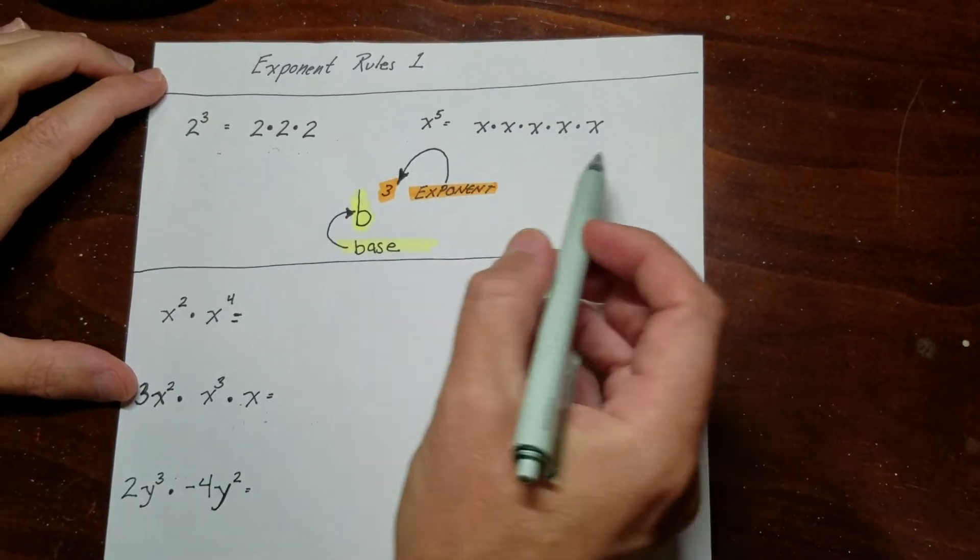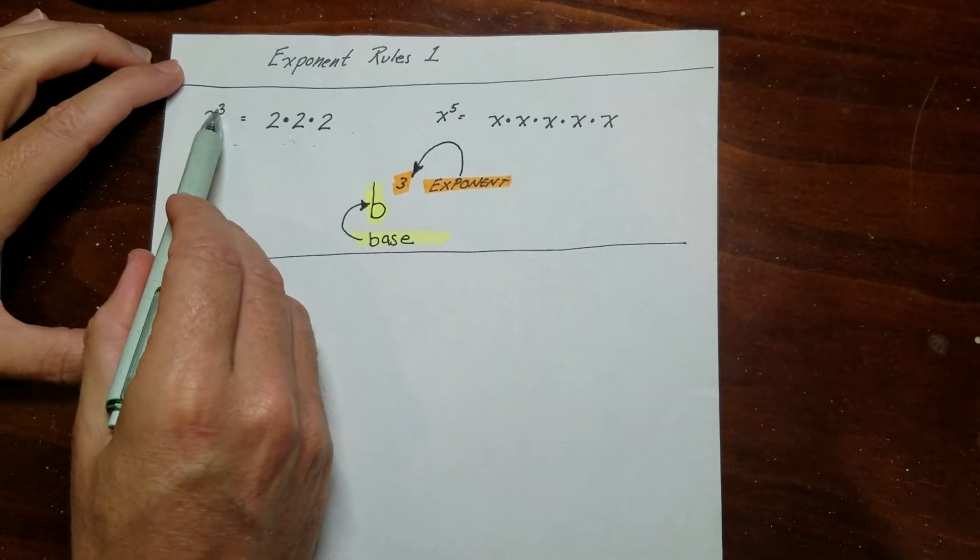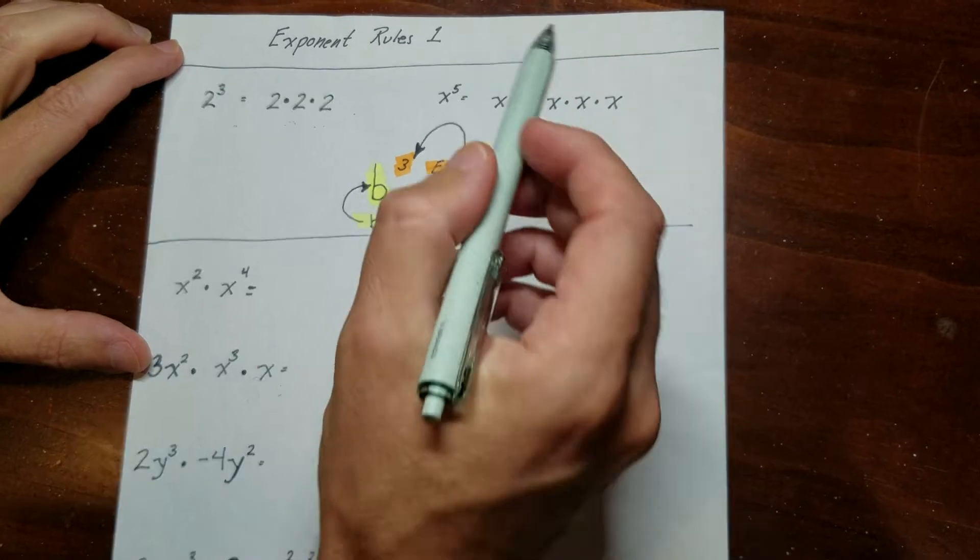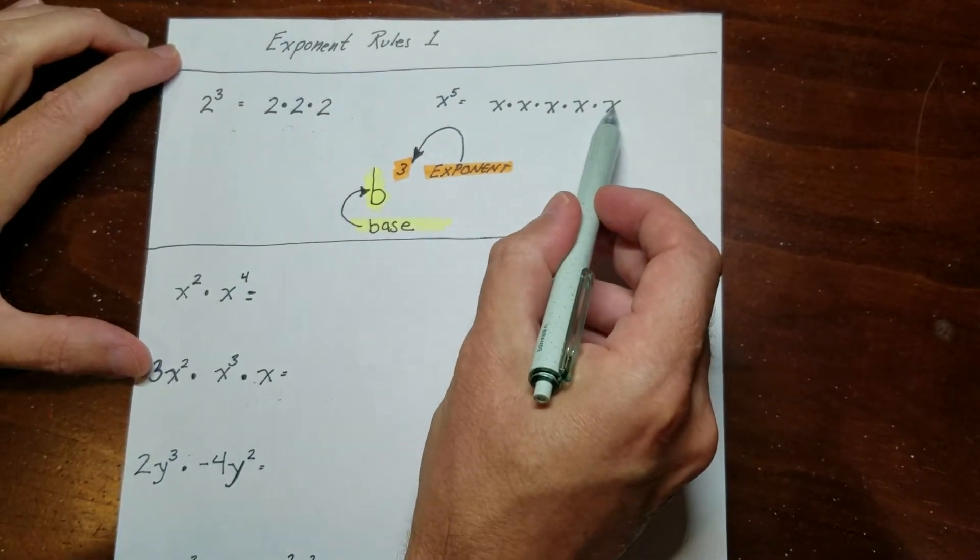So first of all, let's talk about what the notation means. You can see 2 to the power of 3 is 2 times 2 times 2, which is 8. X to the power of 5, it's 5 of these being multiplied.